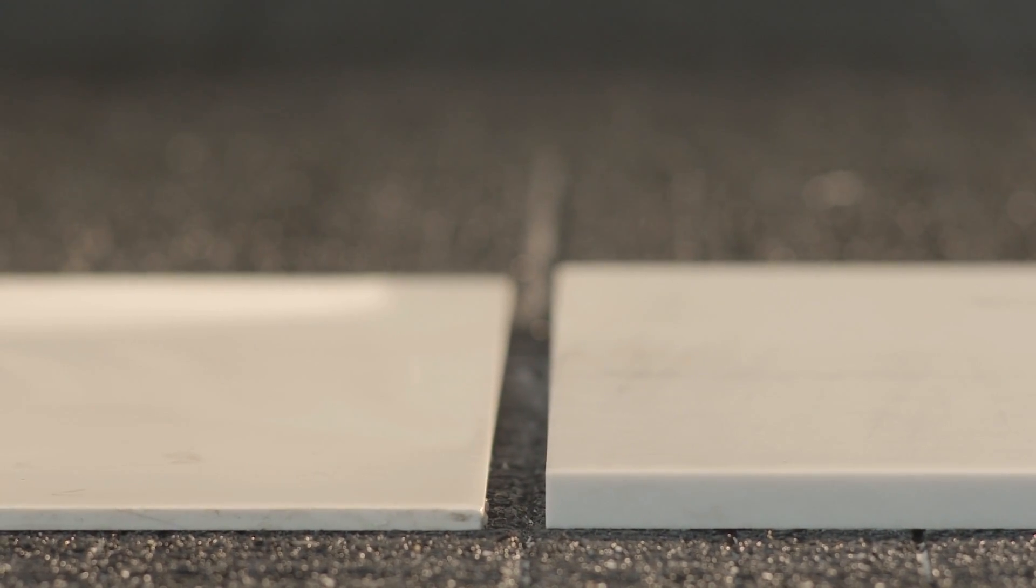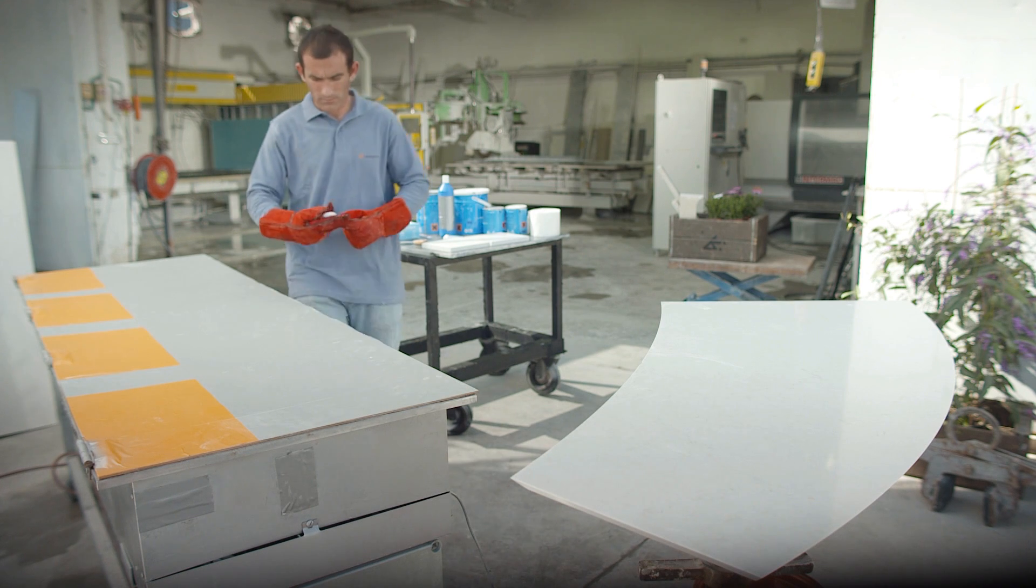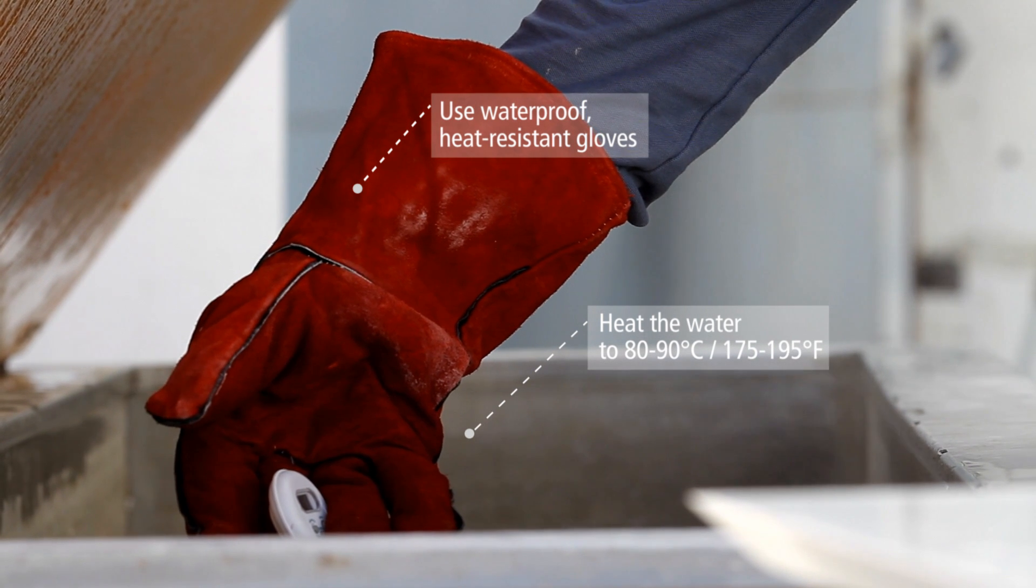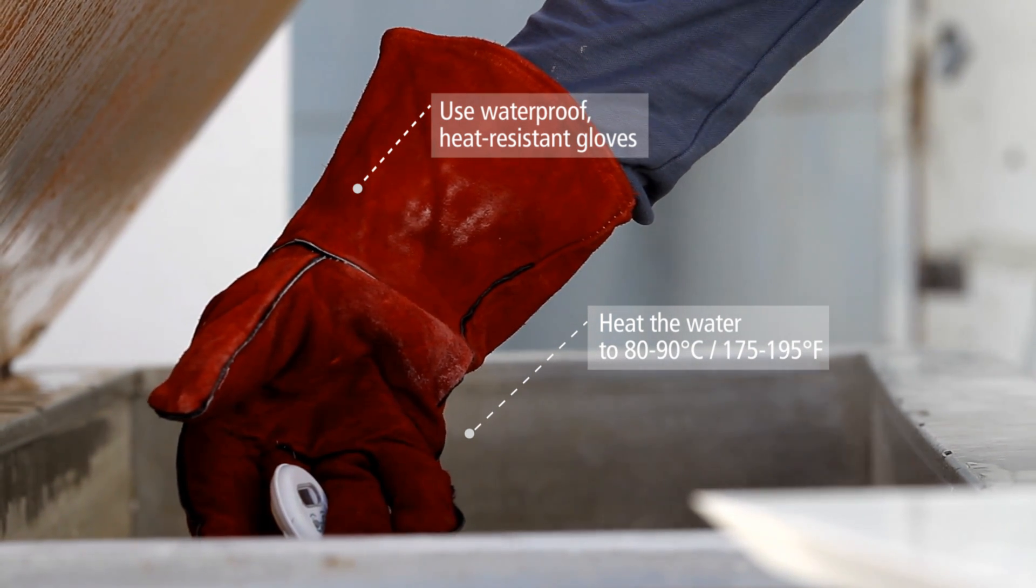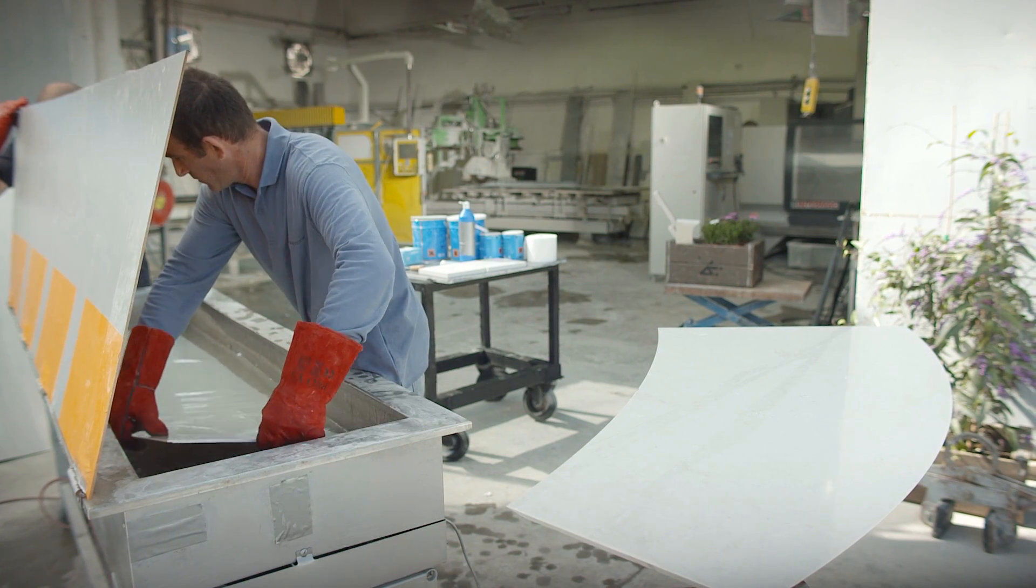Once you've reduced the Caesarstone to the thickness you need, move on to the next step, heating the material. Caesarstone quartz surfaces become flexible when they're heated. Continue with the heating process until the Caesarstone becomes flexible.